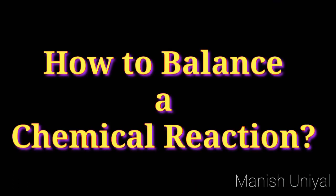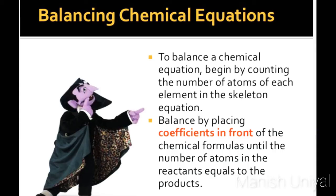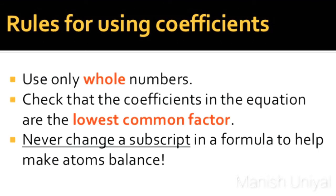How to balance a chemical reaction. To balance a chemical equation, begin by counting the number of atoms of each element in the skeleton equation. Balance by placing coefficients in front of the chemical formulas until the number of atoms in the reactants equals the product. Rules for using coefficients: use only whole numbers; check that the coefficients in the equation are the lowest common factor; never change the subscript in the formula to help make atoms balance.